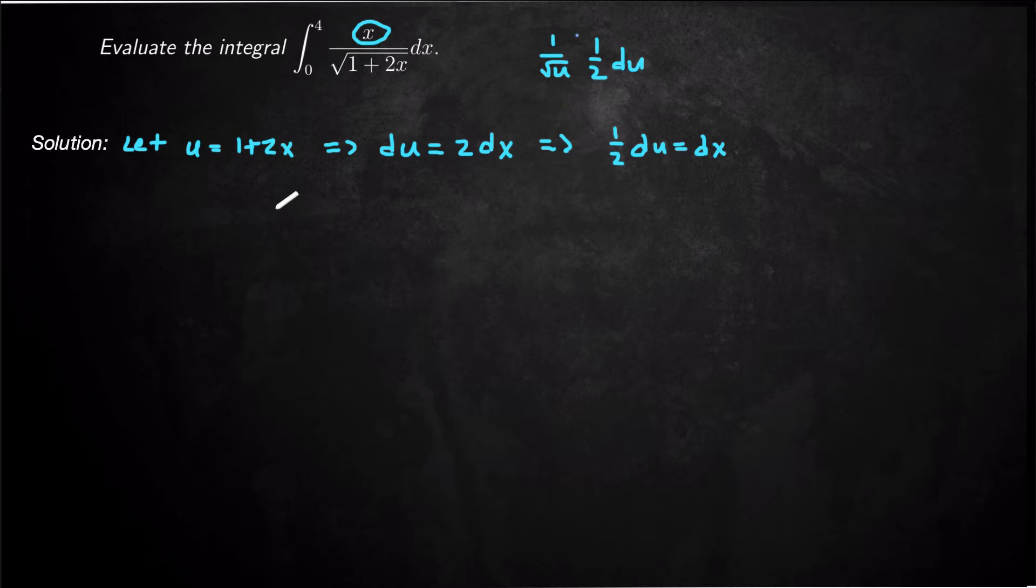So what I'm actually gonna have to do is solve this substitution right here explicitly for x. So if I do that, I get u minus 1 over 2 is equal to x. So if I solve that substitution explicitly for x, then I'm going to substitute u minus 1 over 2 in for x.